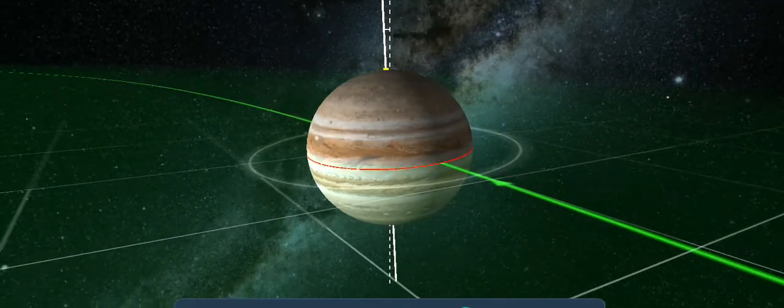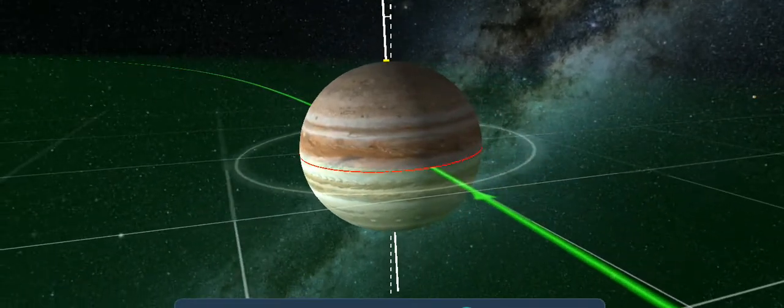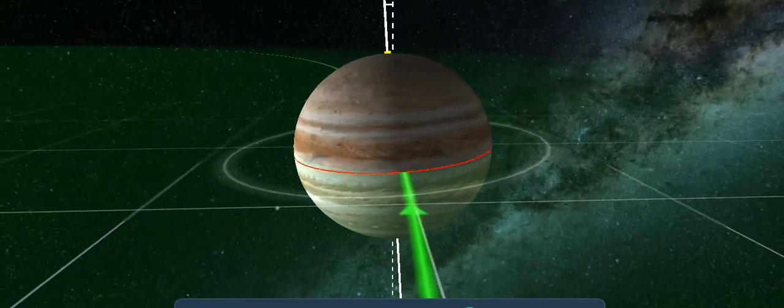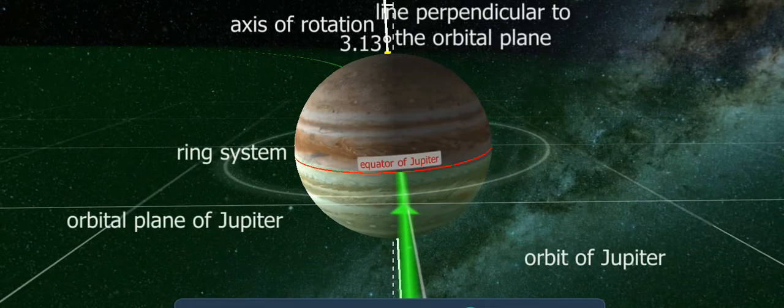Some of the images taken by the Hubble telescope show aurorae on Jupiter. The planet radiates twice as much heat as it receives from the Sun.